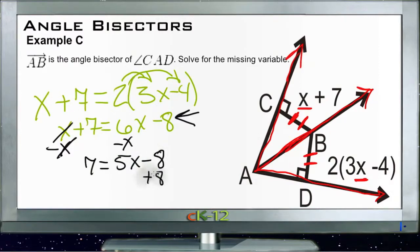We'll add 8 to both sides and we'll get 15 is equal to 5x. We'll divide both sides by 5 and we get x equals 3.